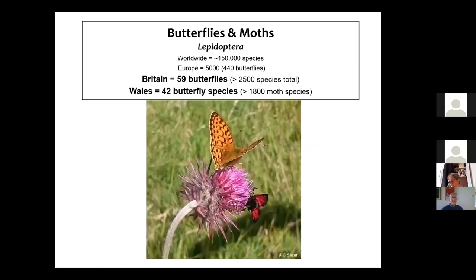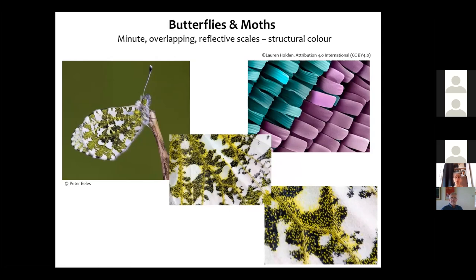Lepidoptera covers butterflies and moths. We've got 42 butterfly species in Wales. Both butterflies and moths have tiny scales that reflect colour — it's called structural colour, so they're not actually coloured themselves. The pattern and arrangement of the scales reflects different wavelengths. Here we have a green-veined white shown increasingly magnified, and in the top right a peacock butterfly under an electron microscope.